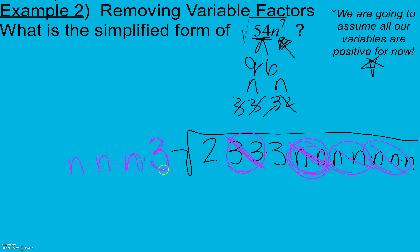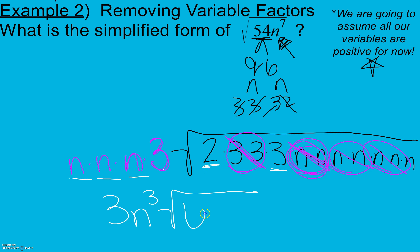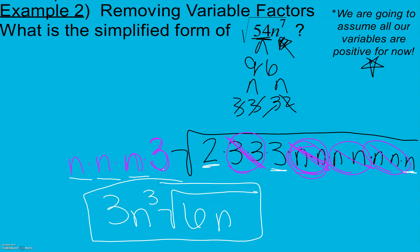On the outside I have a 3, and n times n times n means n cubed — we represent repeated multiplication with exponents. Inside I have 2 times 3 = 6, and 1 n left over. So 3n³ times the square root of 6n is the simplified form.